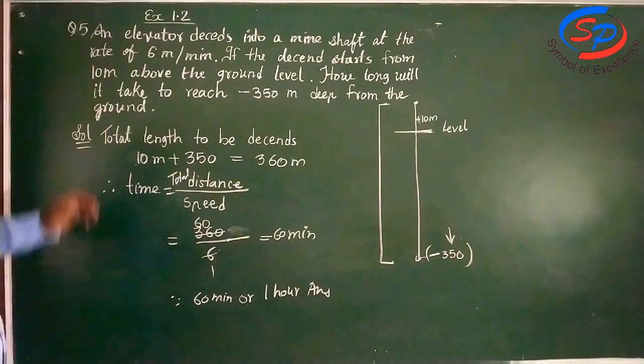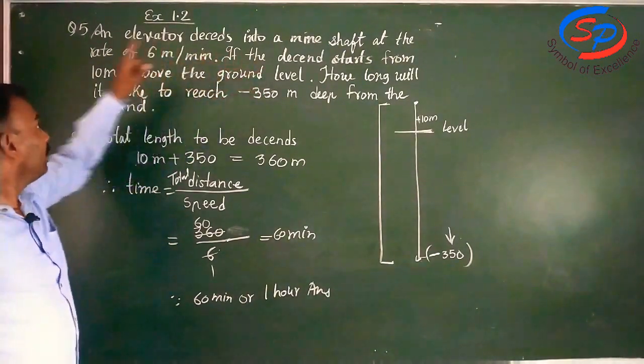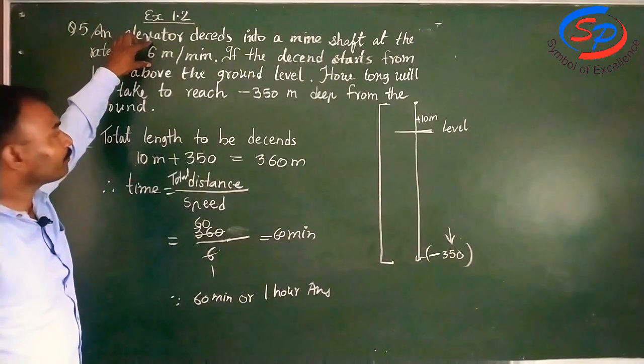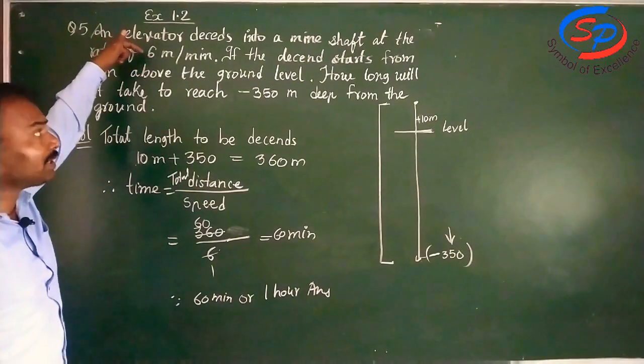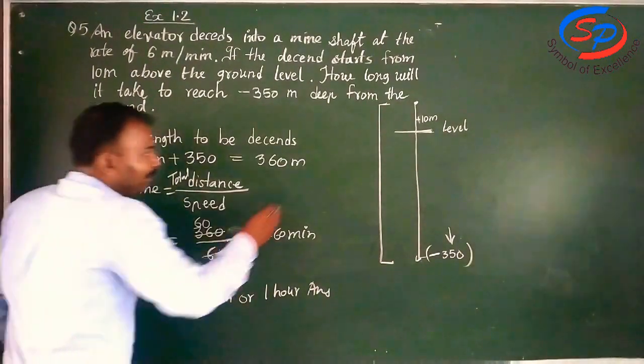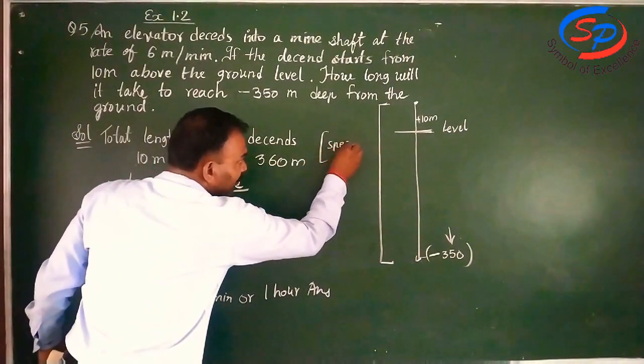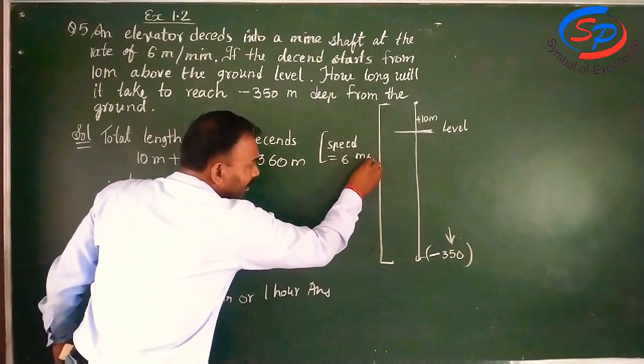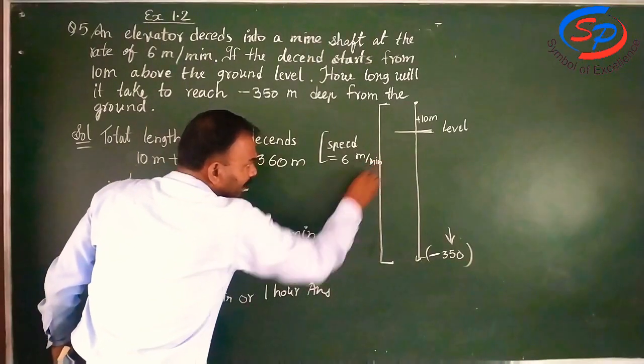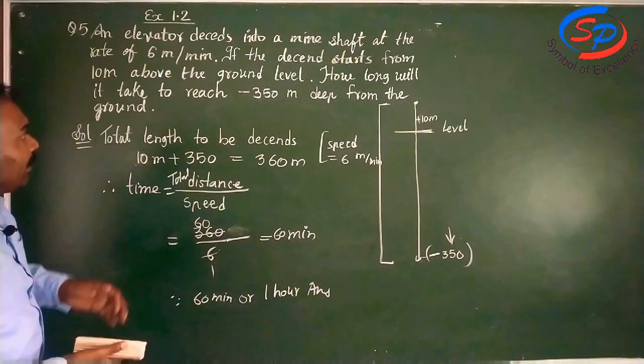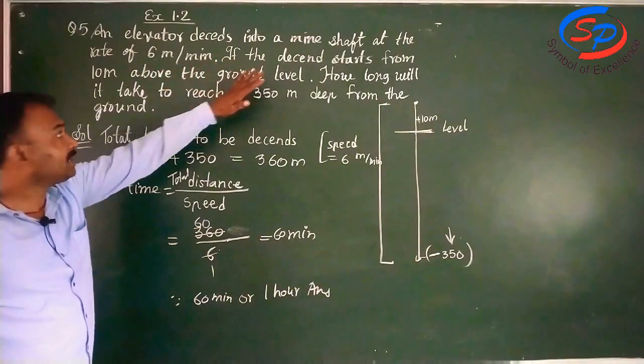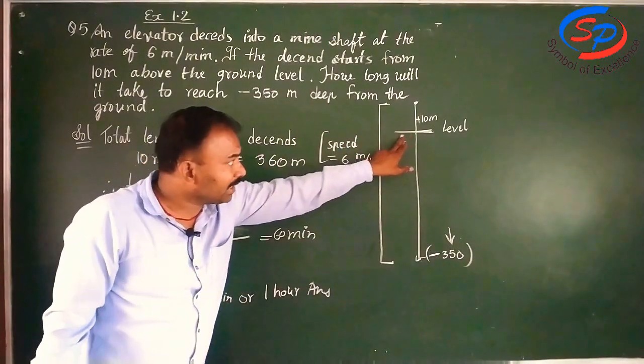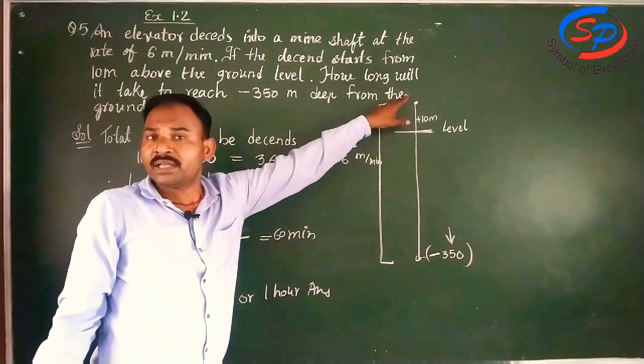Let me explain once more. The question given to us was: An elevator descends into a mine shaft at the rate of 6 meter per minute. This is the rate, the speed at which it is going down. So if we want, we can write separately: Speed equal 6 meter per minute. If the descent starts from 10 meter above the ground level, the diagram I have explained to you, this is the ground level, 10 meter above we have started.